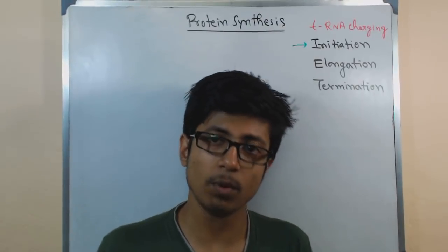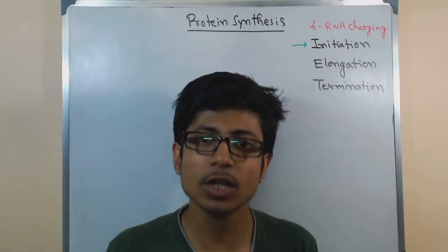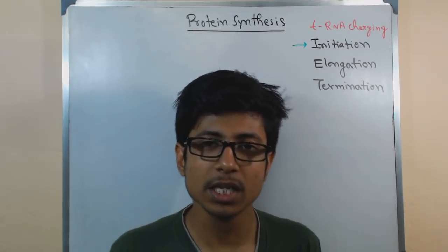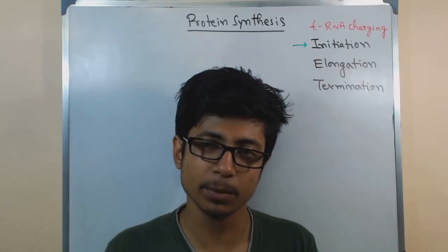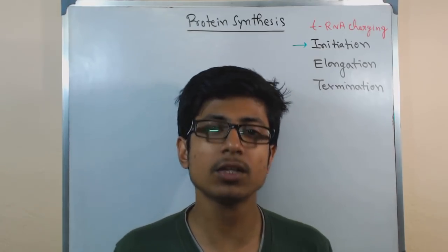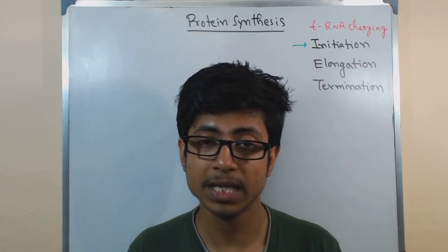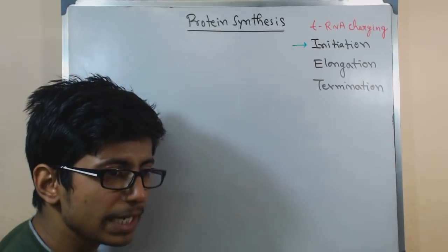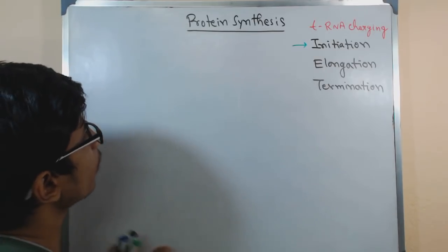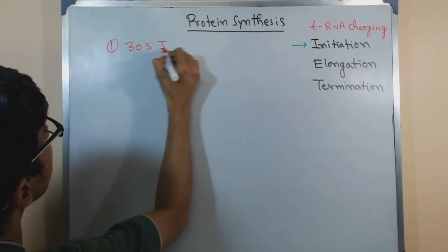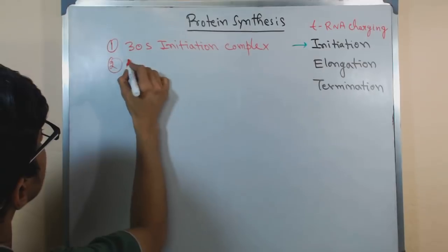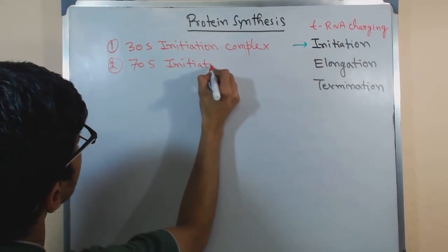For protein synthesis initiation to begin, we require mRNA which has all the codons, and the ribosome — both the large as well as the small subunits. In prokaryotes, the small subunit is termed as 30S and the large subunit is termed as 50S, and the complete set of both subunits is termed as 70S ribosome. We also require all the charged tRNAs. The first important thing is to form the initiation complex: first the 30S initiation complex, and then the 70S initiation complex.